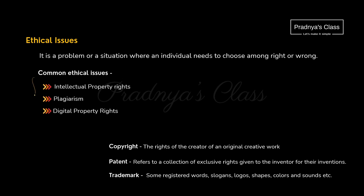We will be discussing some of the ethical issues. The first one is intellectual property rights, the second one is plagiarism, and the third is digital property rights. Ethical issues are situations where an individual will choose between right or wrong. Before getting the knowledge of these issues, let's try to understand some of the terminologies.